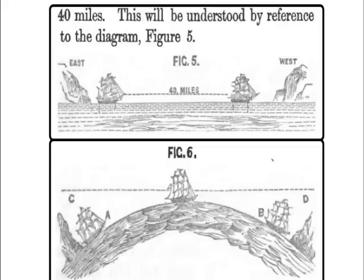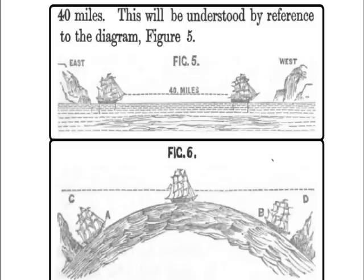If the earth were a globe, the appearance would be as represented in figure 6. The ship coming into view from the east would have to ascend an inclined plane for 20 miles until it arrived at the center of an arc AB, once it would have to descend for the same distance. The square of 20 miles multiplied by 8 inches gives 266 feet as the amount the vessel would be below the line CD at the beginning and at the end of the 40 miles.